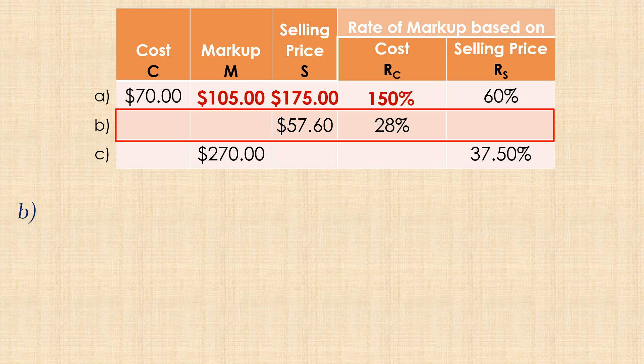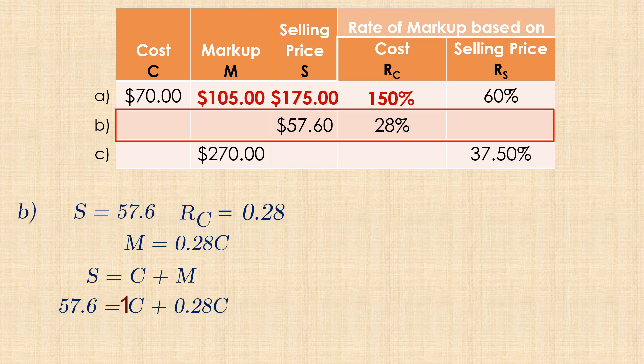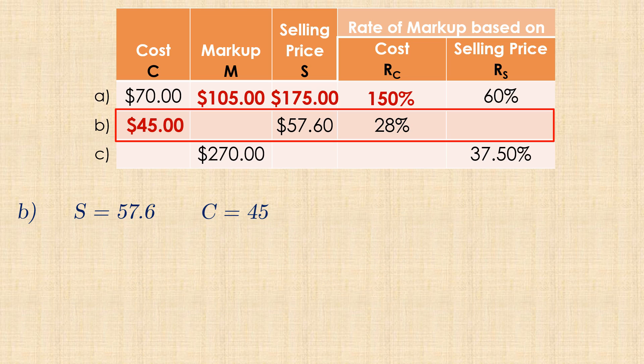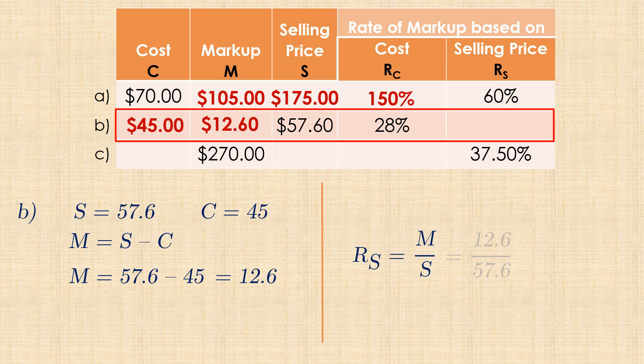In B, we have a Selling Price of $57.60, and a rate of markup based on cost of 28%. That is, markup is 28% of cost, or M equals 0.28C. So from Selling Price equals cost plus markup, we have 57.6 equals 1C plus 0.28C. So 57.6 equals 1.28C. And dividing both sides by 1.28 gives the cost price of $45. Now, the amount of markup is Selling Price minus Cost, which is $12.60. The rate of markup based on Selling Price is therefore markup over Selling Price, which gives 0.2188 or 21.88%.